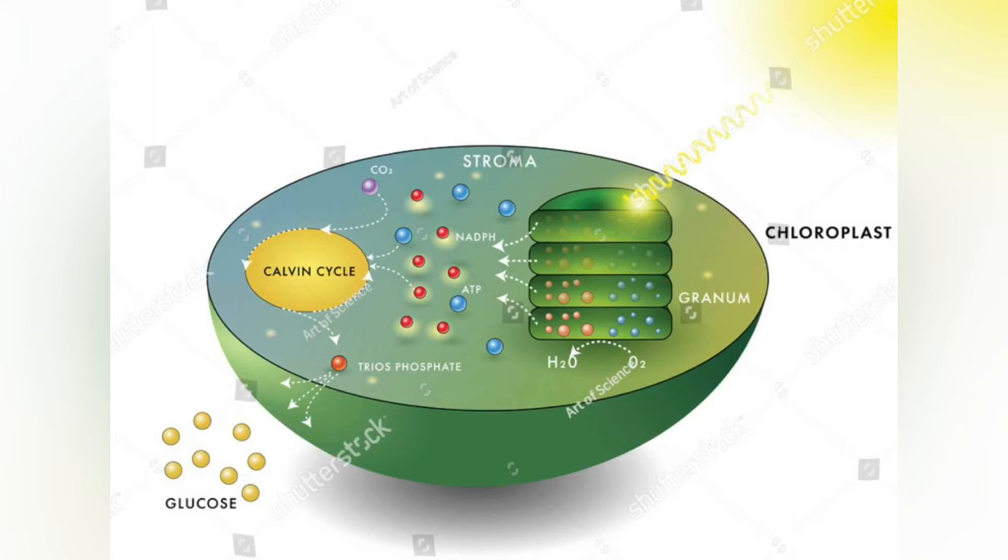The stroma is also the location of chloroplast DNA and chloroplast ribosomes, and thus also the location of molecular processes including chloroplast DNA replication.